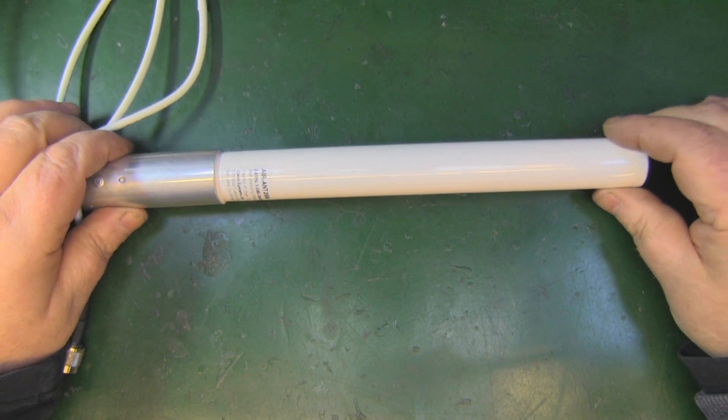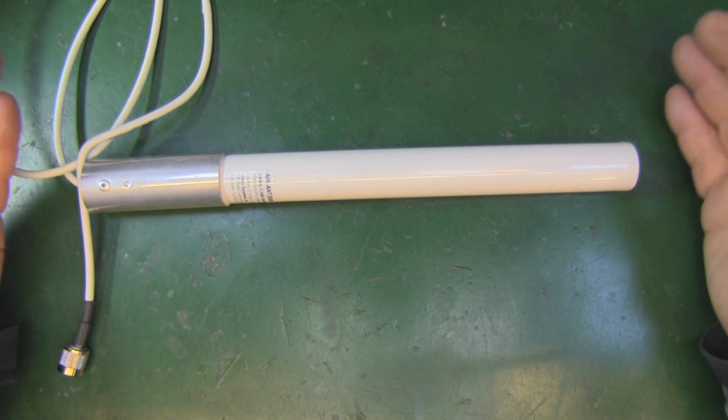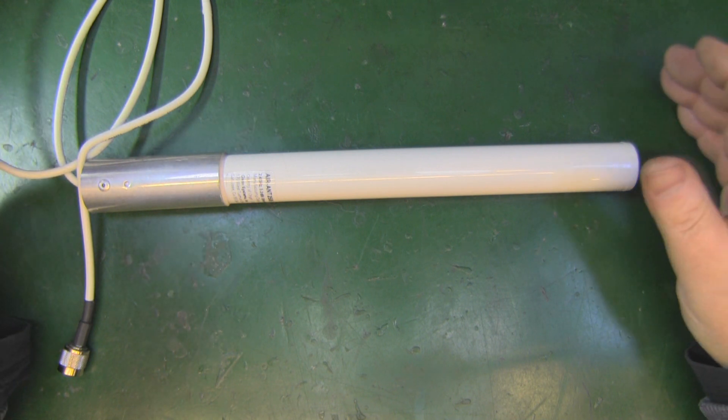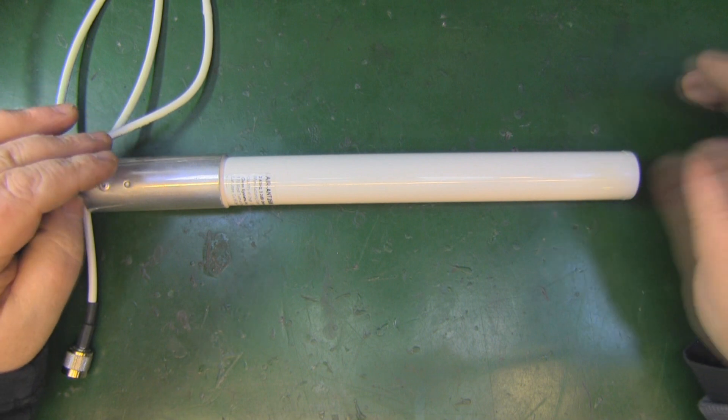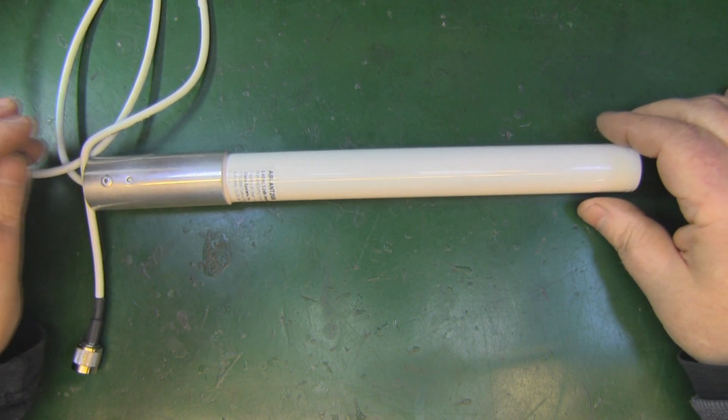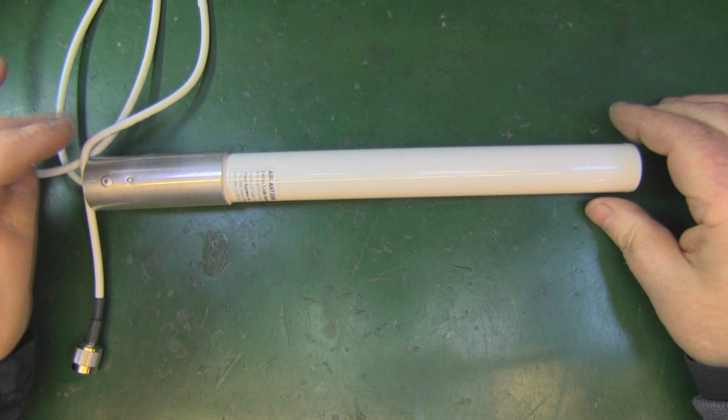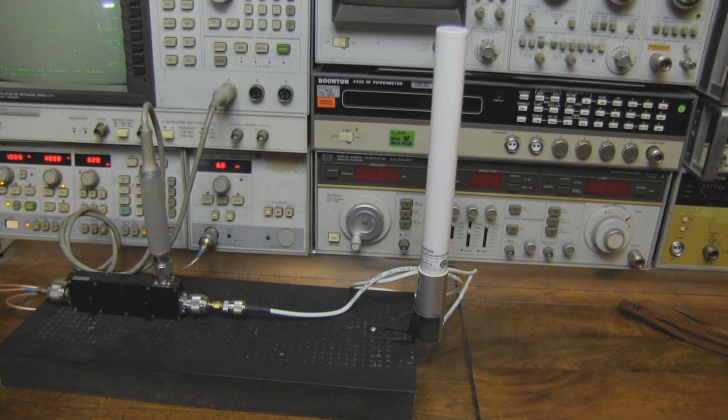Before I take it to bits, we'll take it over to the test bench. Pretty sure that with this being a Cisco antenna it'll be spot on for 2.4 gigahertz Wi-Fi, but let's take it over and have a quick look.